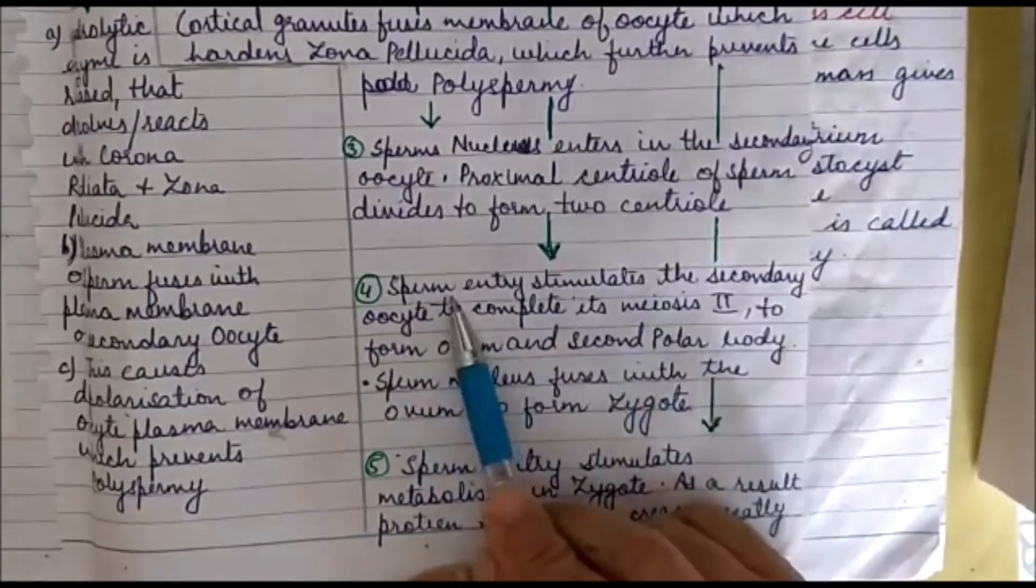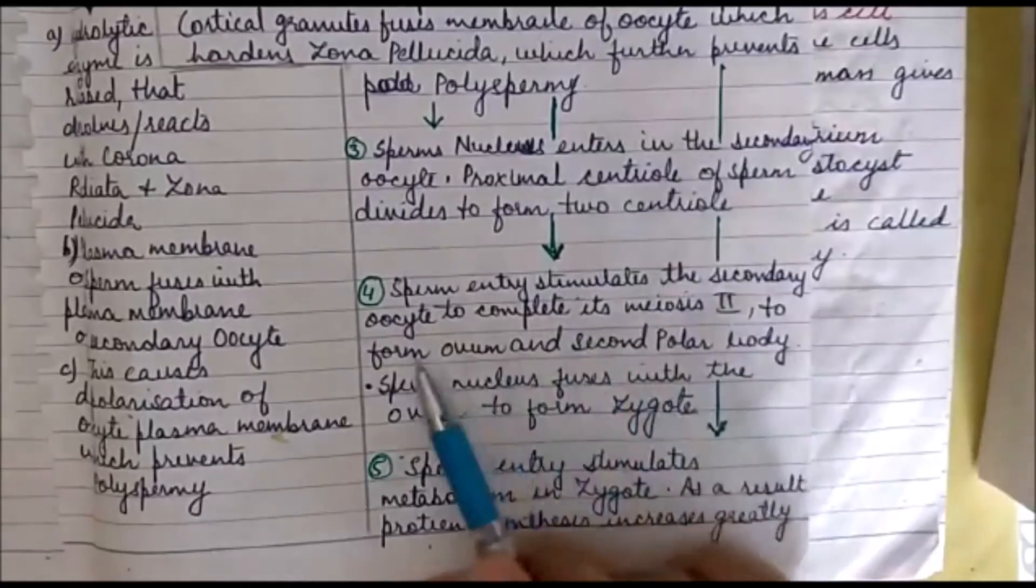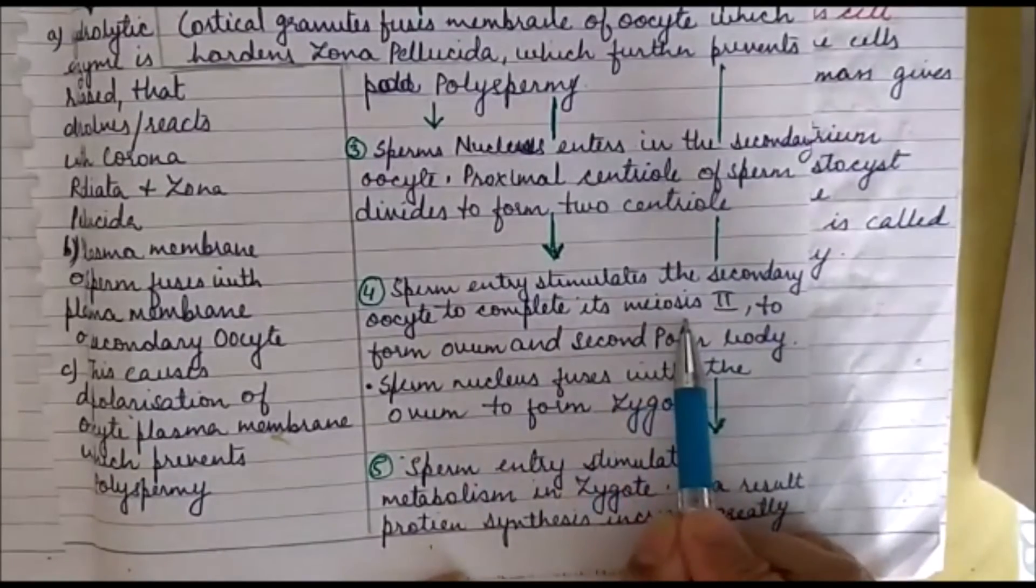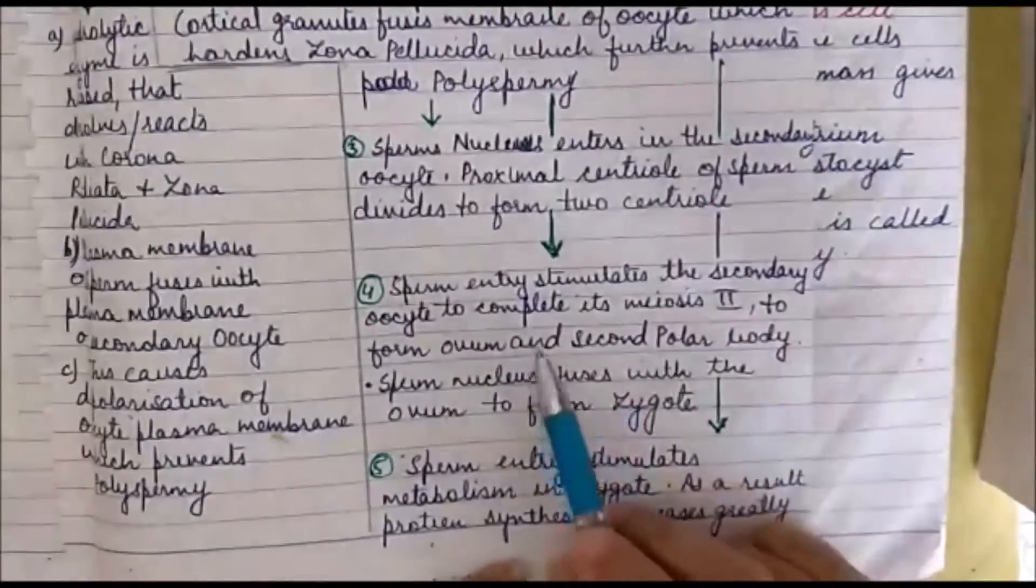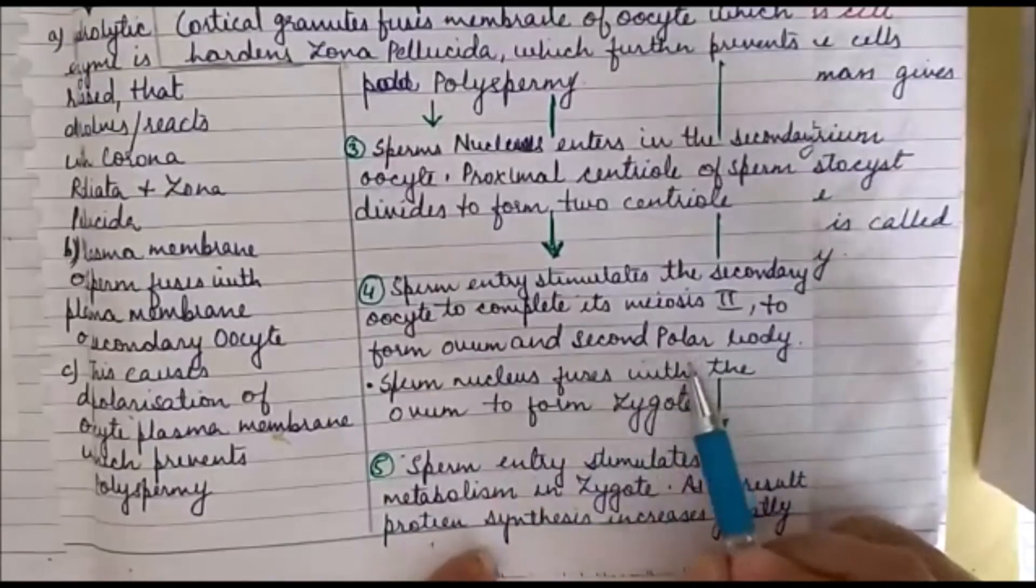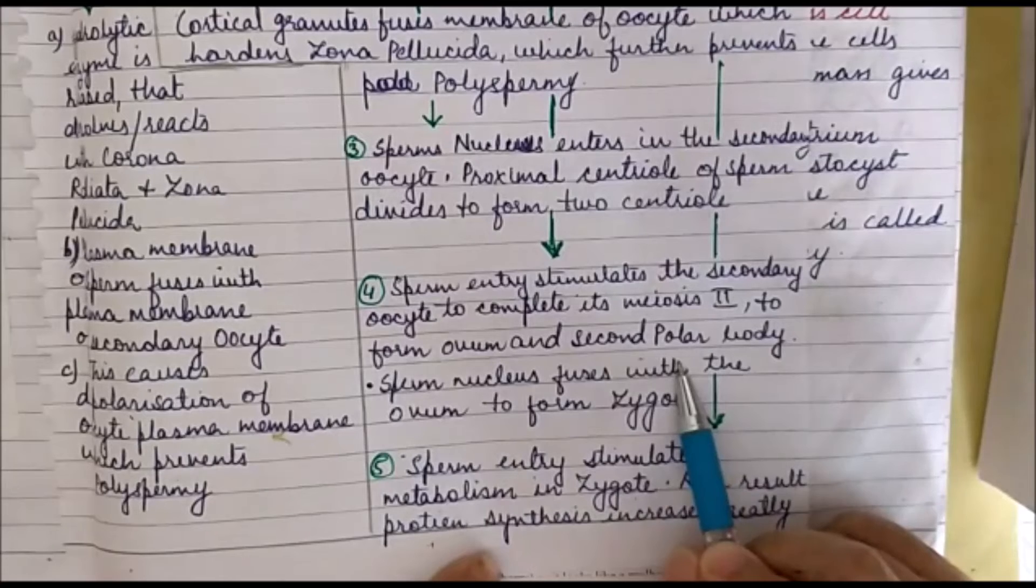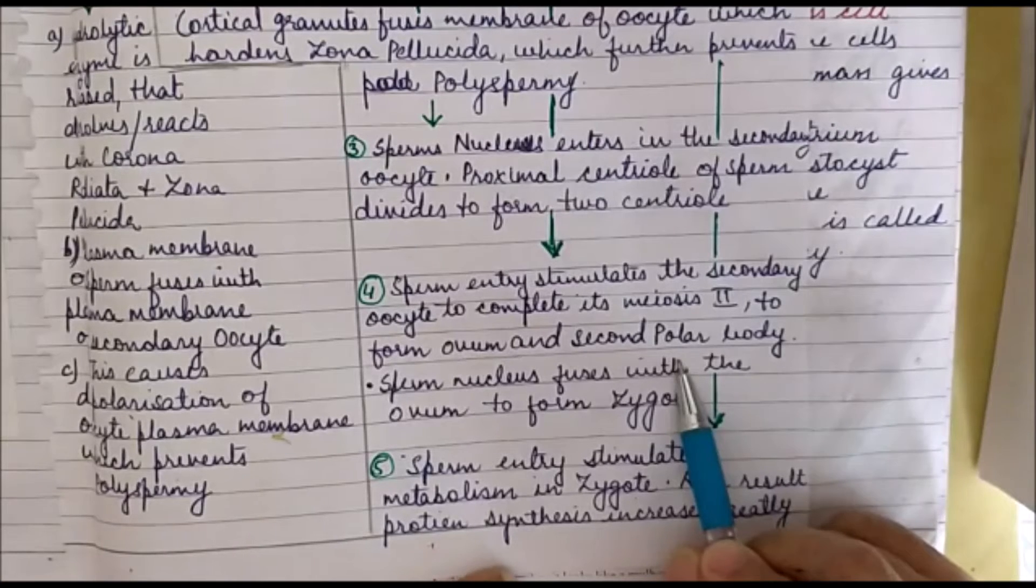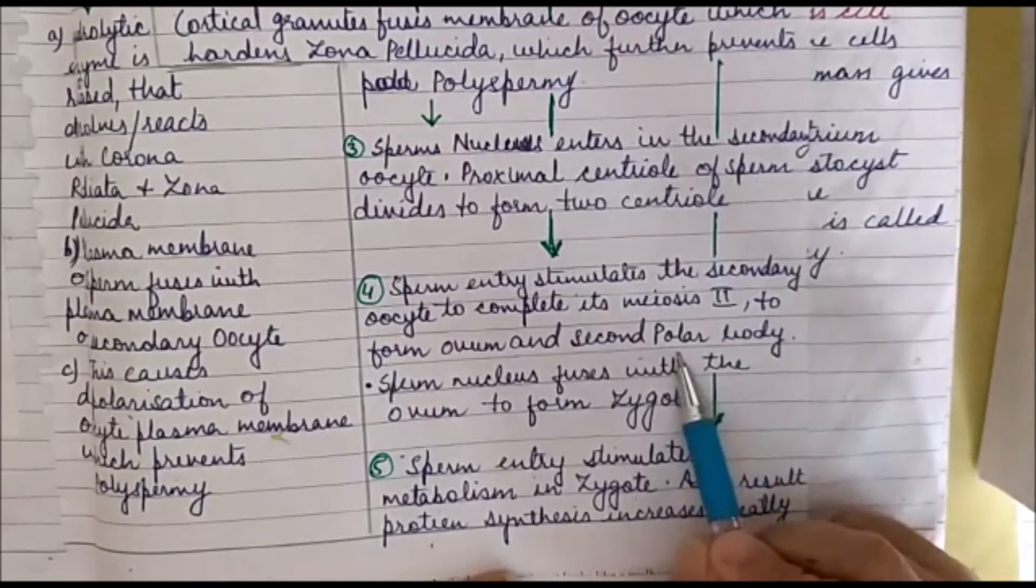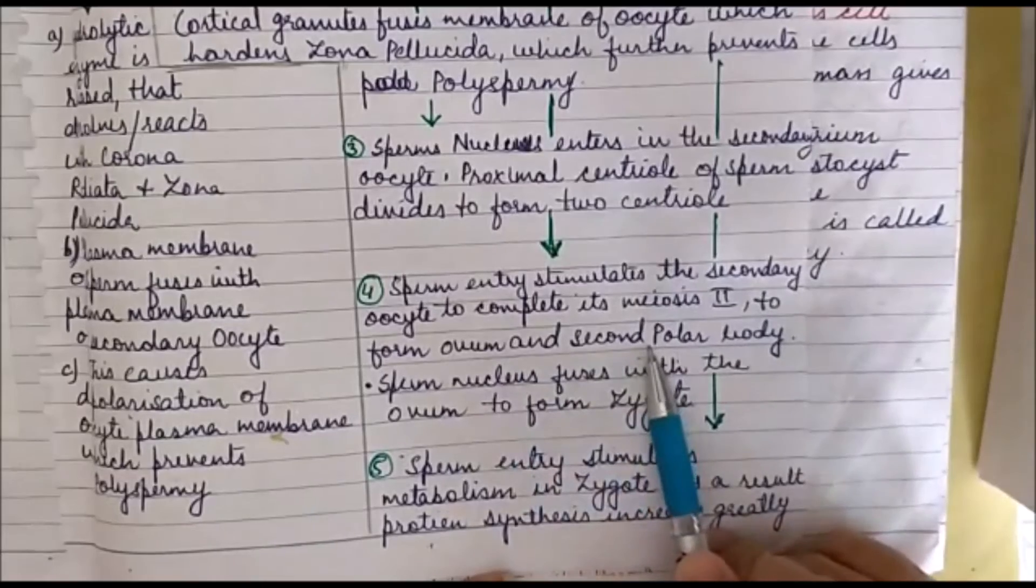After this comes karyogamy. In karyogamy, the sperm entry stimulates the secondary oocyte to complete its meiosis 2 stage. The secondary oocyte completes the meiosis 2 stage and forms the ovum and second polar body. Students, if you remember in the previous video, I had told you that the secondary oocyte is arrested at metaphase 2 stage. After the entry of the sperm, this arrested stage further completes its meiosis 2 division and forms ovum and second polar body.